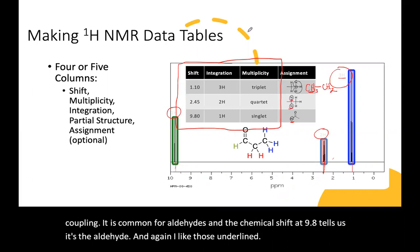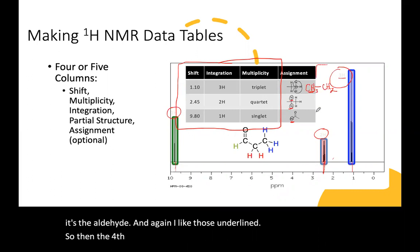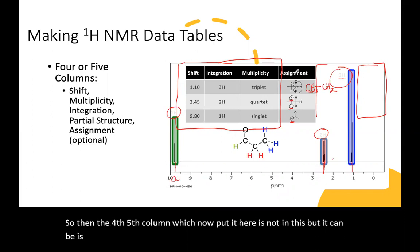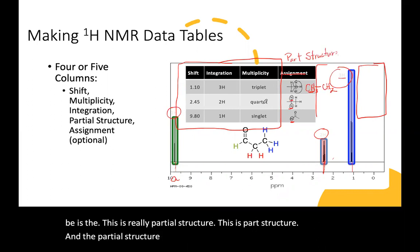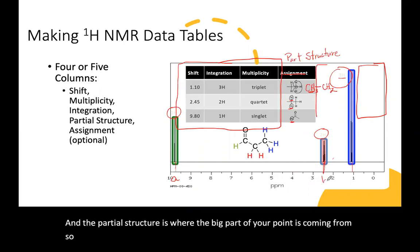So then the fourth, fifth column, which I'll put it here, is not in this, but it can be, is the assignment. This is really partial structure. This is partial structure. And the partial structure is where the big part of your points is coming from. So assignment is A, B, C, you've assigned a letter or a number to the peaks. And then you'd say which one it is in here.